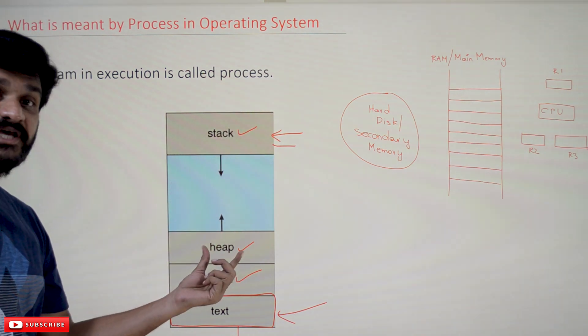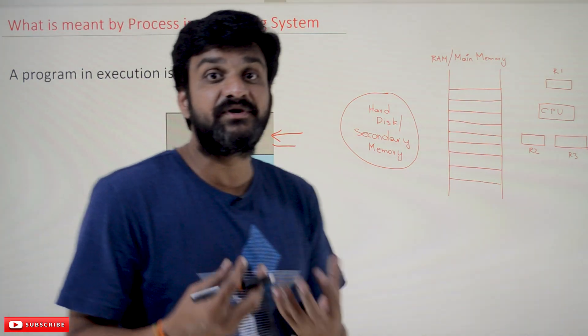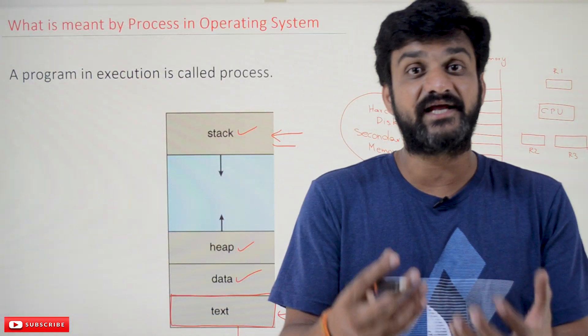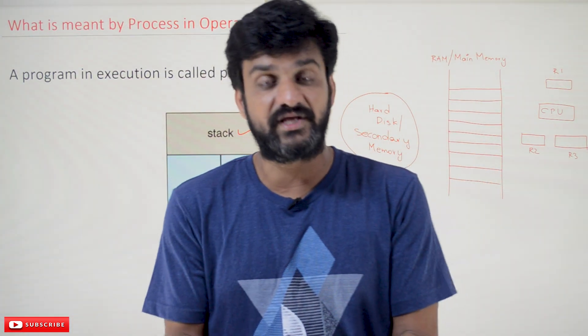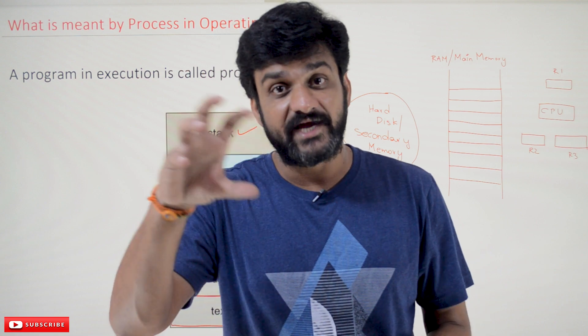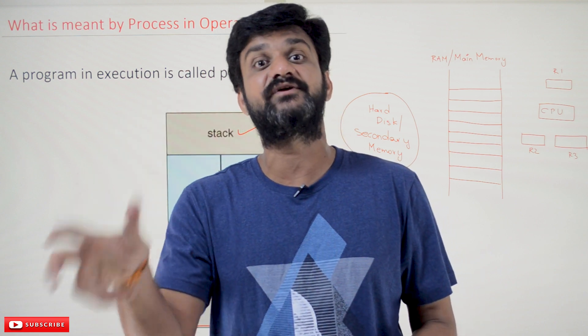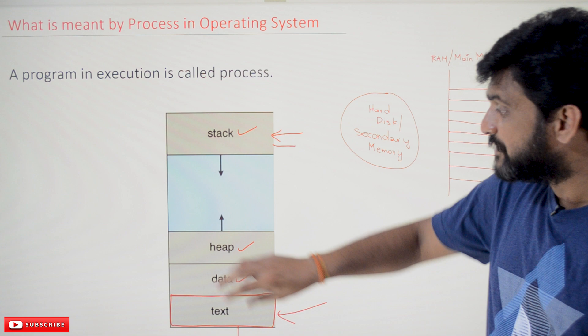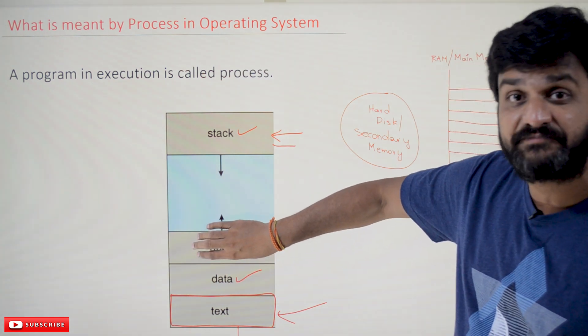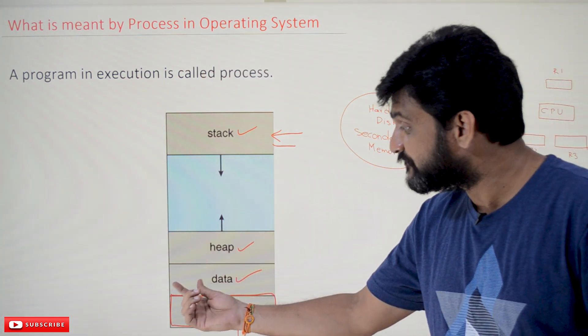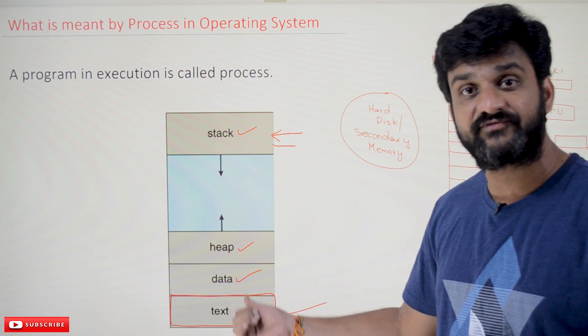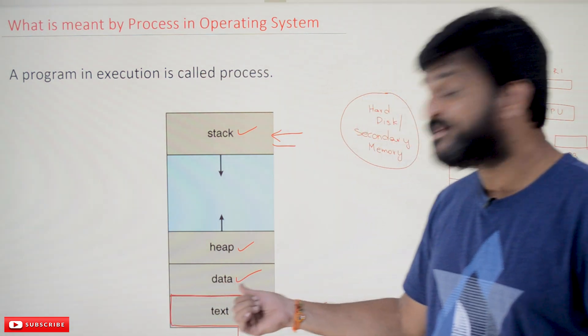What about this heap? Whenever dynamic memory is allocated by using malloc, calloc, or realloc, such runtime memory will get created in this heap section.